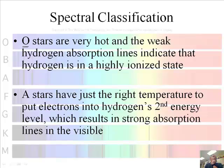So that leads us to some classification. So let's talk about the stars, and each of these is a letter. So the O stars are very hot, which I just said. And they have weak hydrogen absorption lines, indicating that hydrogen is in a highly ionized state. So you have very little hydrogen. Well, you have a lot of hydrogen, but it's very ionized, which means that it's charged.